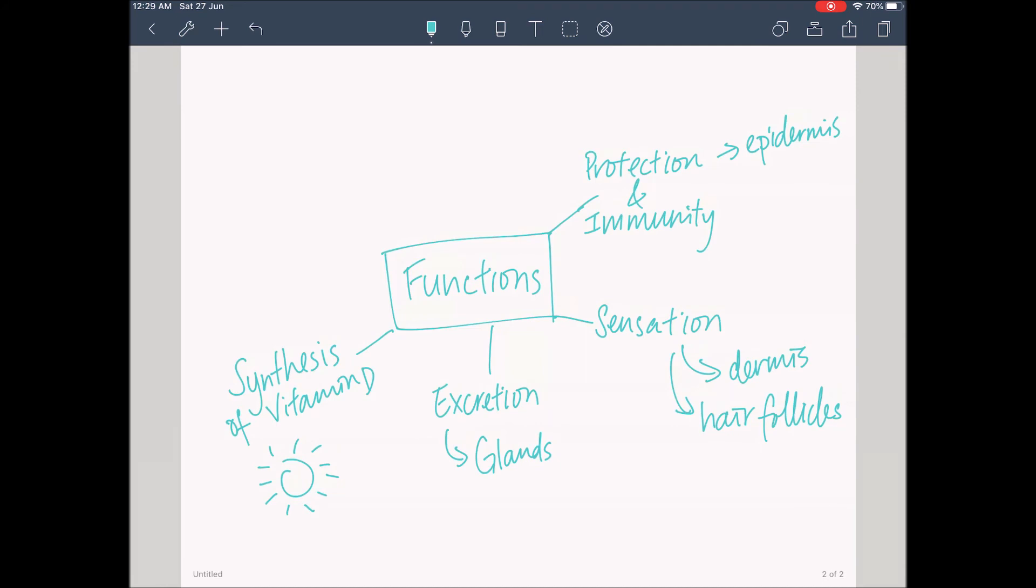Lastly, the function of the skin is to regulate our body temperature. To cool down, something called vasodilation happens, which is when blood vessels widen to allow blood flow to the surface of the skin to release heat by thermal radiation. When sweat evaporates, it brings the heat away from our body.